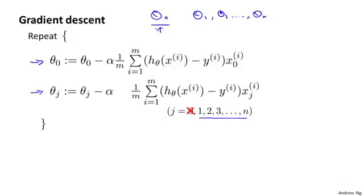Concretely, if we want to take this algorithm and modify it to use the regularized objective, all we need to do is take this term at the bottom and modify it as follows. I'm going to take this term and add minus lambda over m times theta j. And if you implement this, then you have gradient descent for trying to minimize the regularized cost function j of theta.